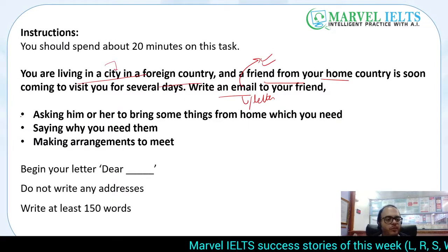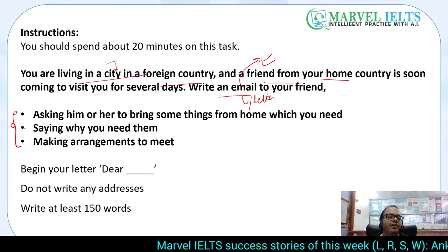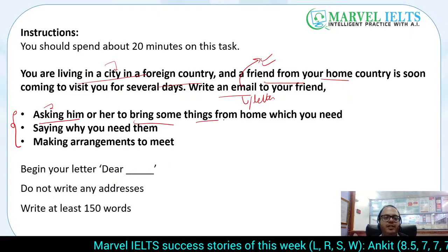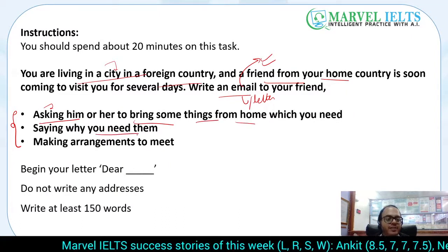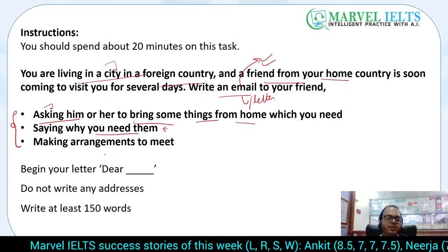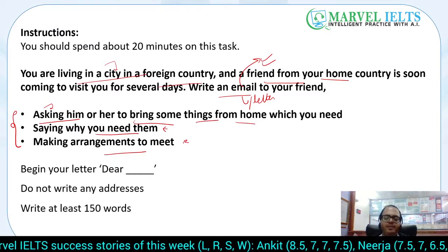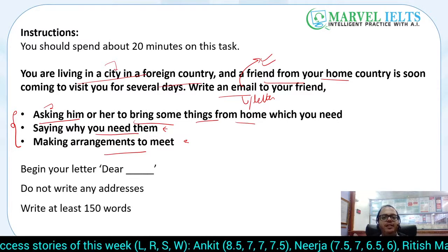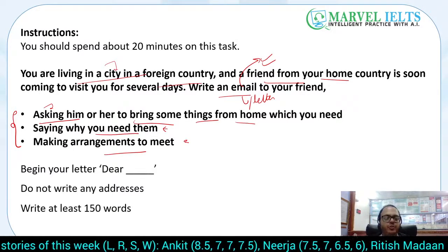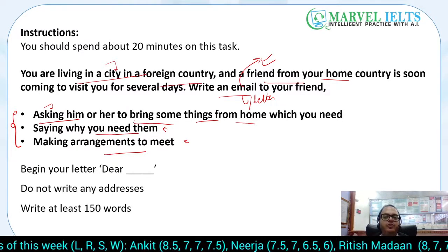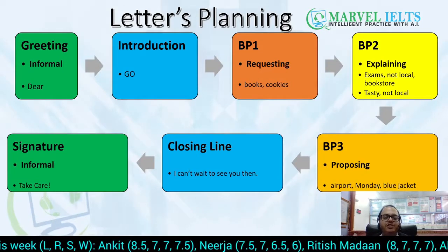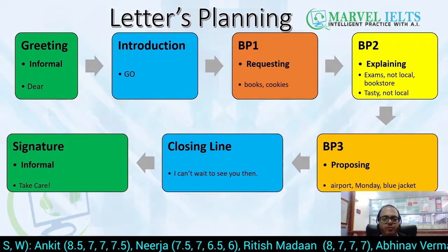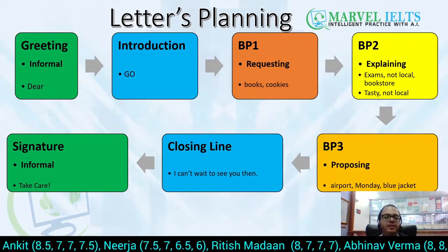You have three bullet points to focus on: first, you have to ask your friend to bring some things from home; second, you have to give reasons explaining why you need them; and third, you have to propose and explain the arrangements — where you will meet, when you will meet. So this is the planning stage, which is very important.